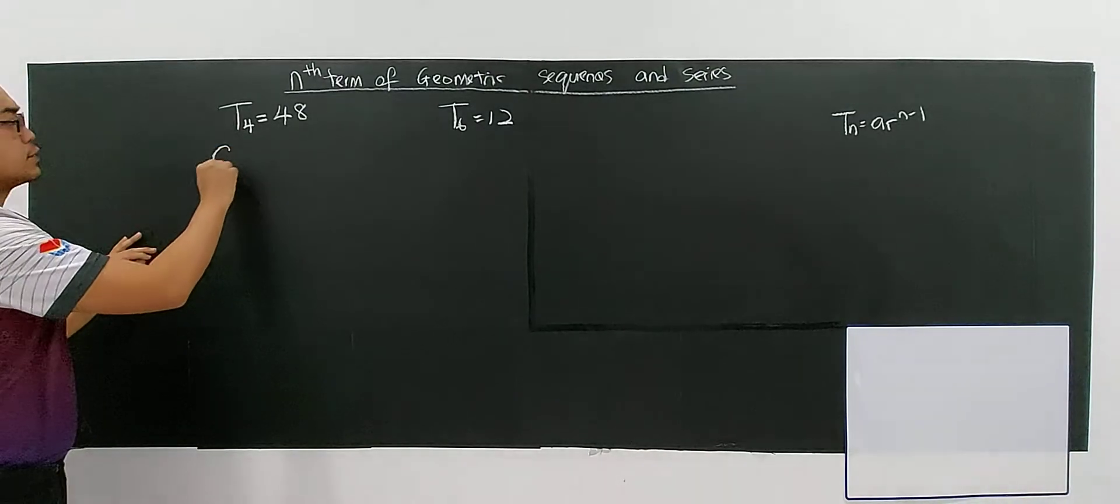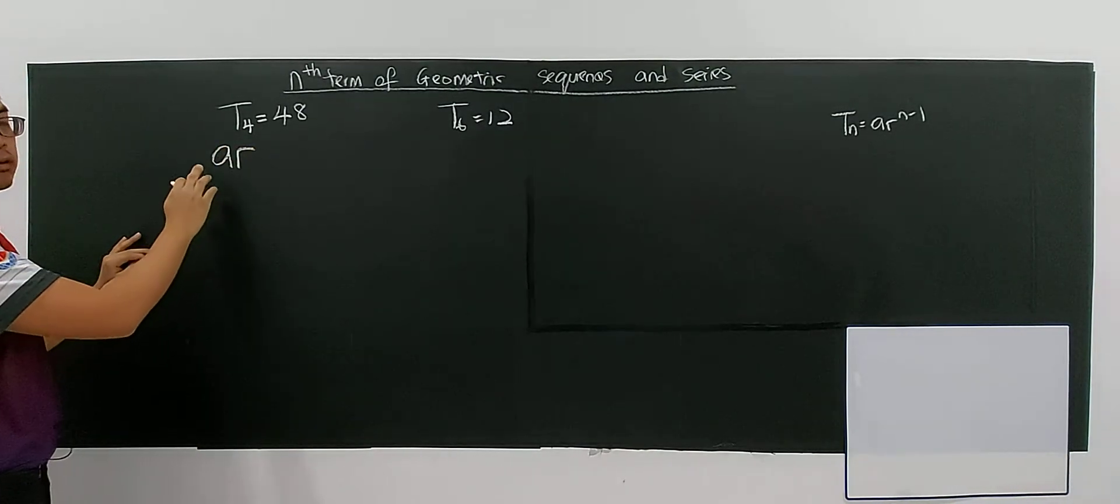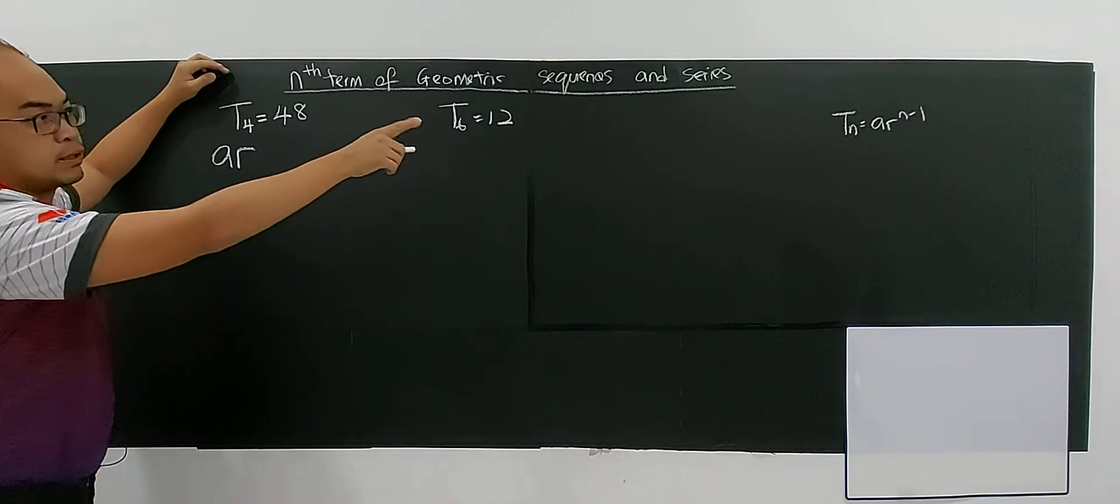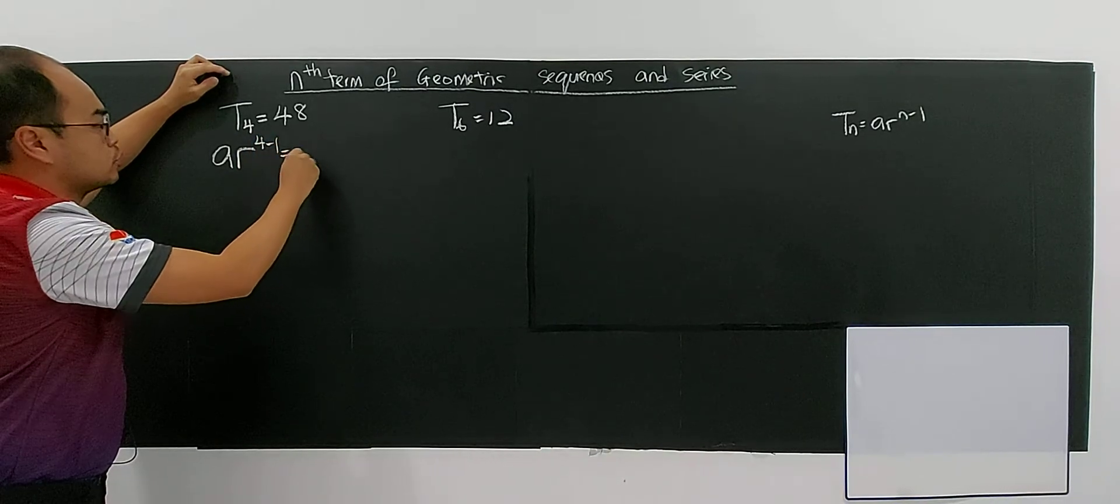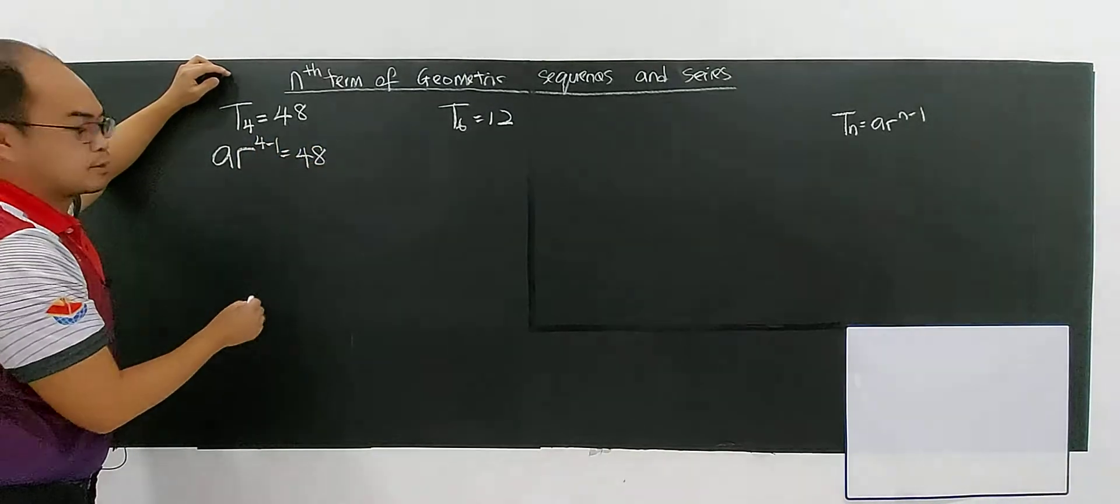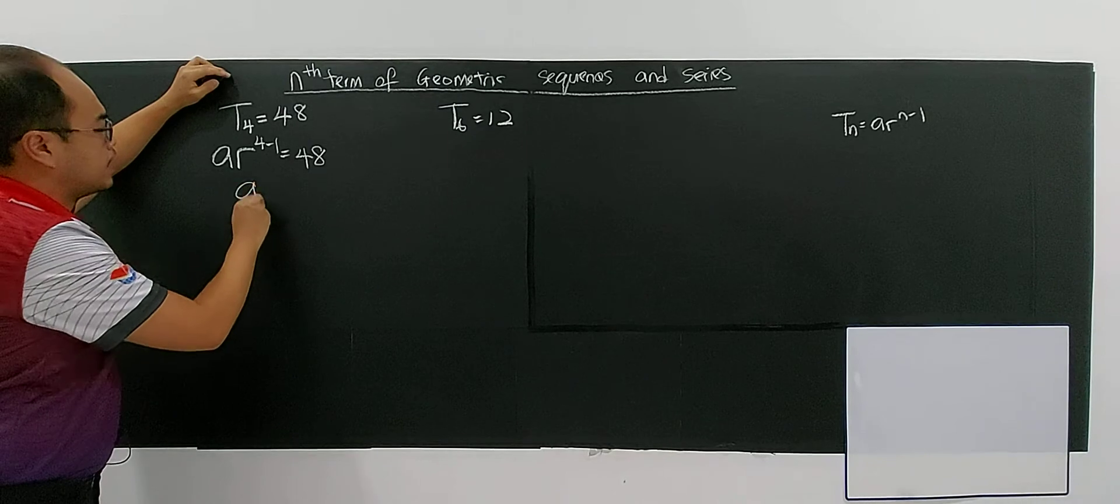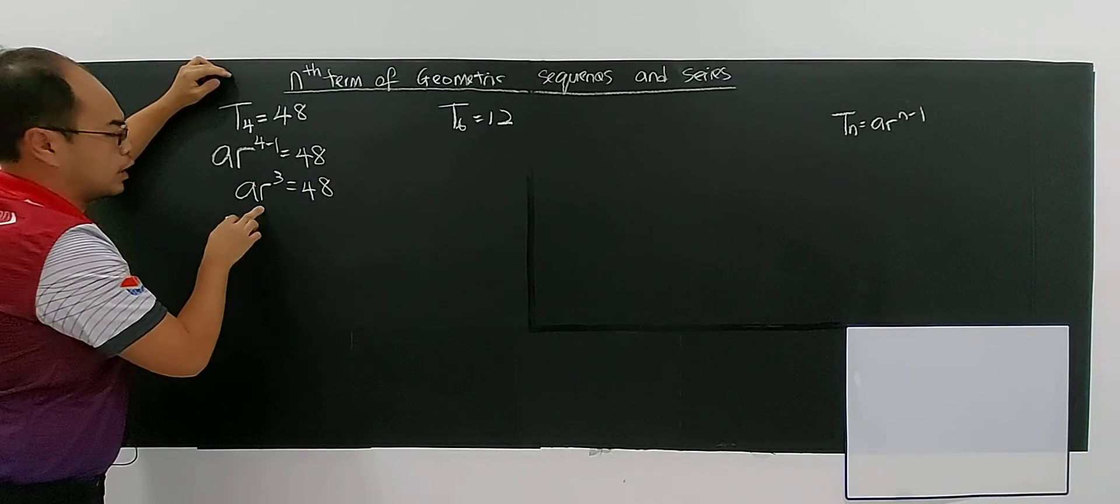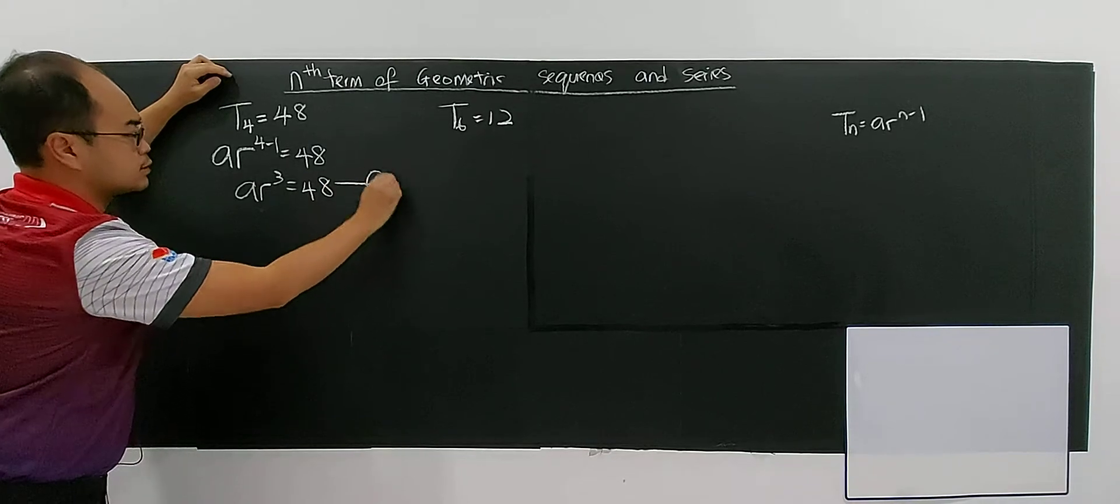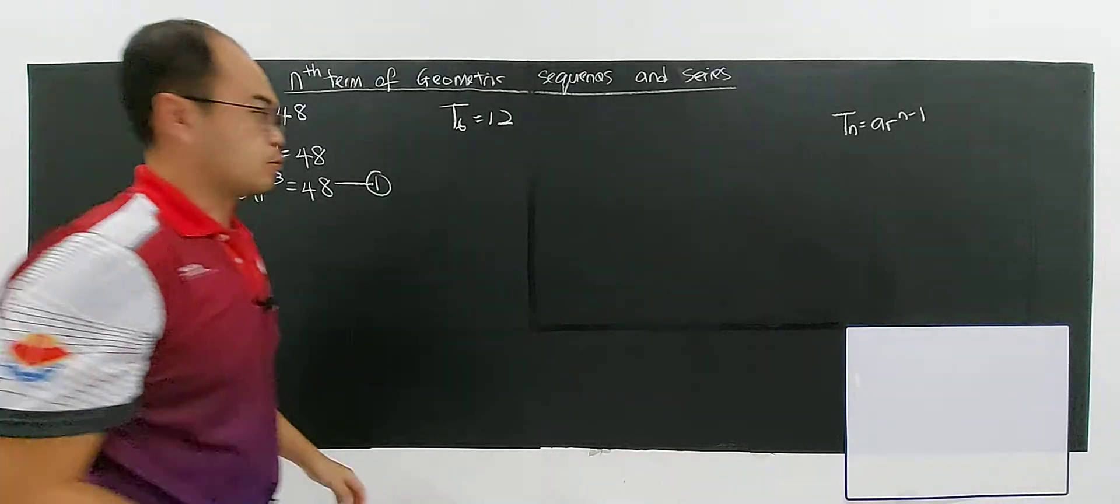For T4, you don't know the first term a or the common ratio r, but you know the formula n minus 1. So, a·r^(4-1) = 48. You have ar³ = 48. Since there are two unknowns, you put it as equation 1.